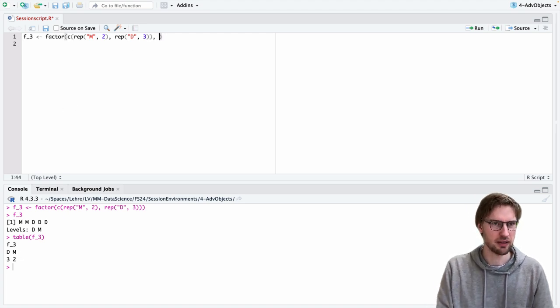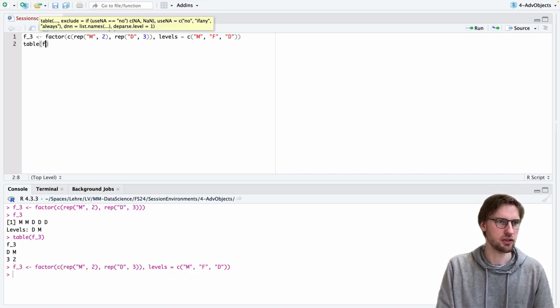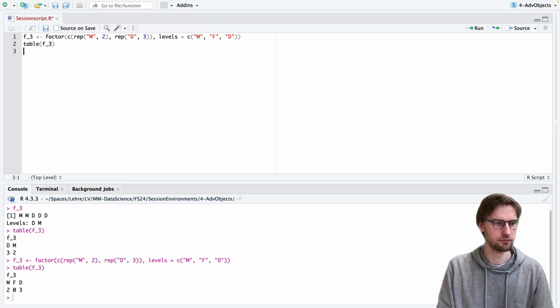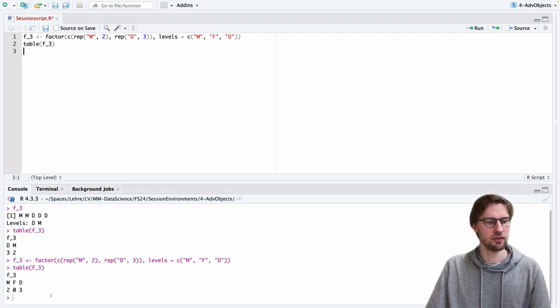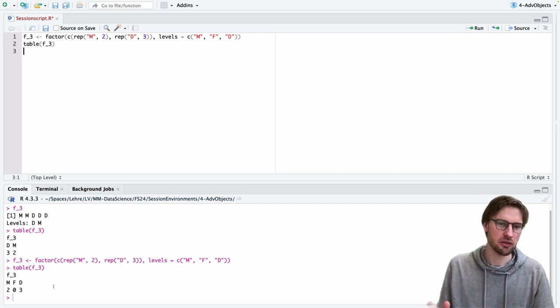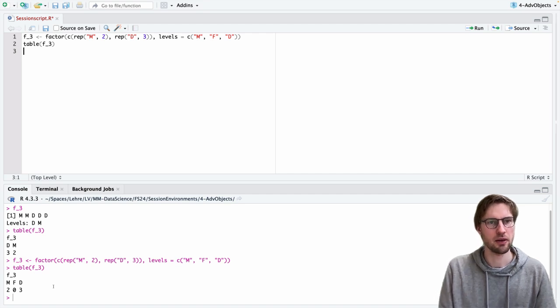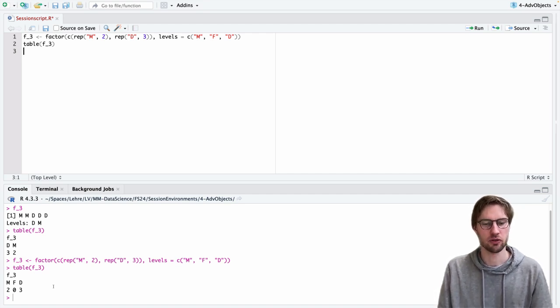So if we want to do that, we need to set up the levels explicitly. And if we do so and we now use the function table, you see here that all the levels are considered and even those levels for which no entry has been found in the underlying vector, they are showing up here. Again, this can be useful later on for visualization and can also be useful to keep in mind what the potential levels of a factor would be and what does not show in the data you're referring to.